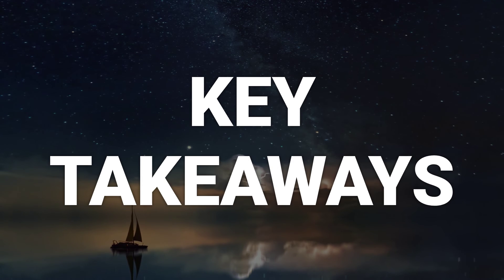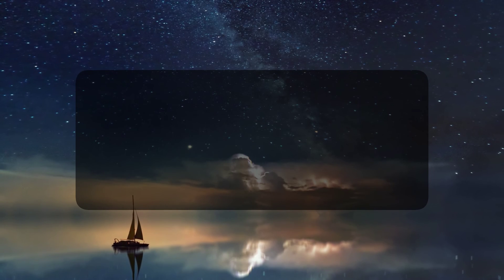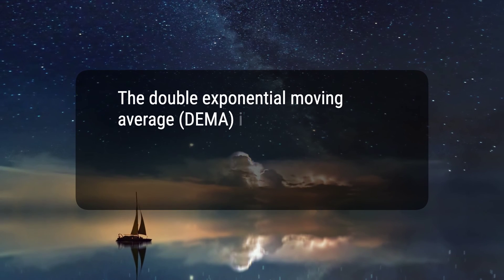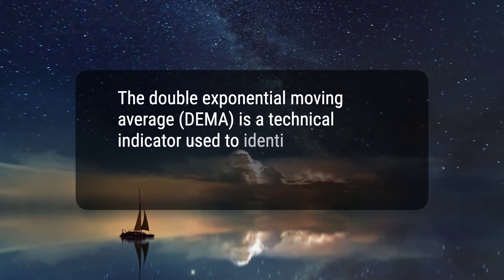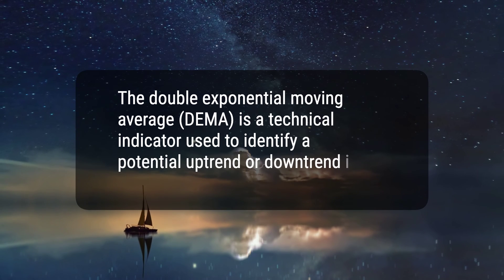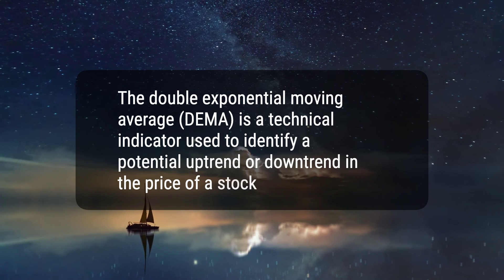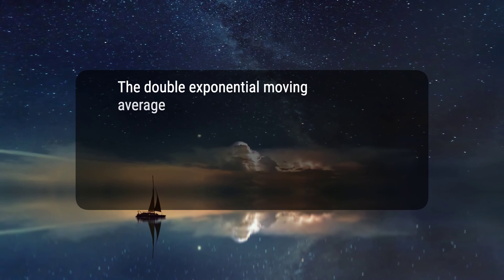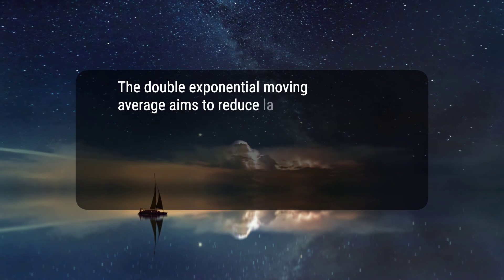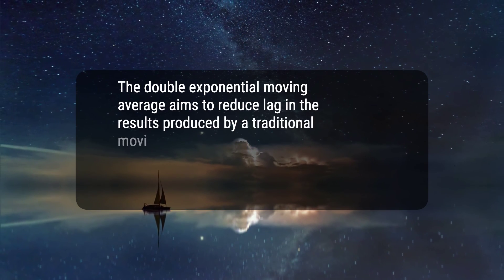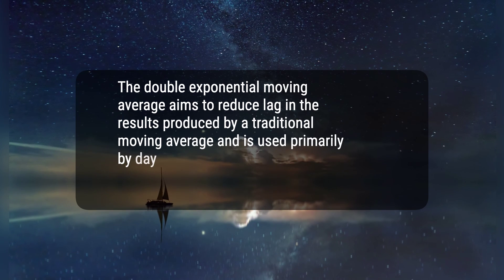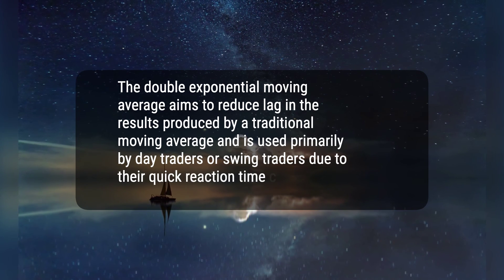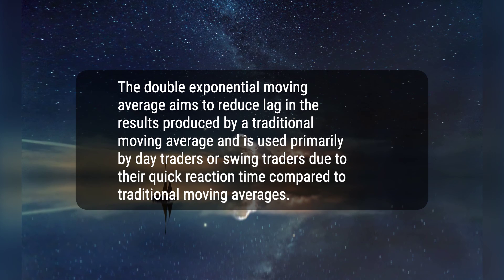Here are two key takeaways. 1. The Double Exponential Moving Average, DEMA, is a technical indicator used to identify a potential uptrend or downtrend in the price of a stock or other asset. 2. The Double Exponential Moving Average aims to reduce lag in the results produced by a traditional moving average and is used primarily by day traders or swing traders due to their quick reaction time compared to traditional moving averages.